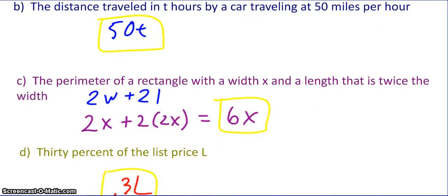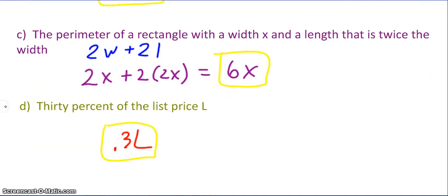For the next one, the perimeter of a rectangle with a width x and a length that is twice the width. So I know normally the perimeter is 2 times the width plus 2 times the length. Well, my width is x. My length is 2 times that width. So I have 2x plus 2 times the quantity 2x, which becomes 6x. So my expression to represent the perimeter is 6x. 30% of the list price L. So if the list price is L, 30% of L is 0.3 times L. That is my expression.